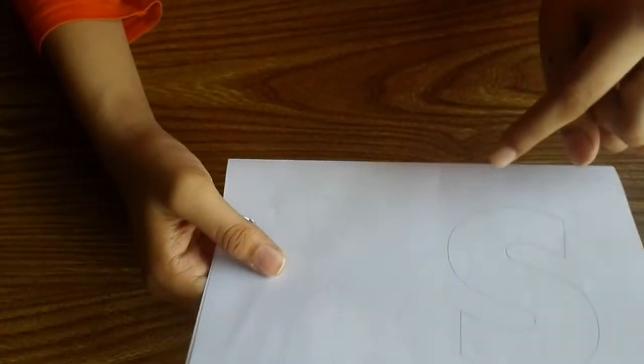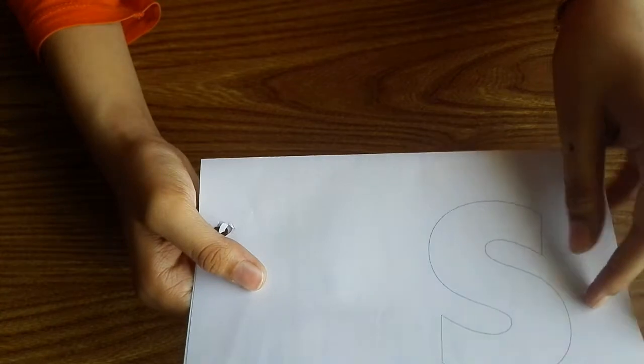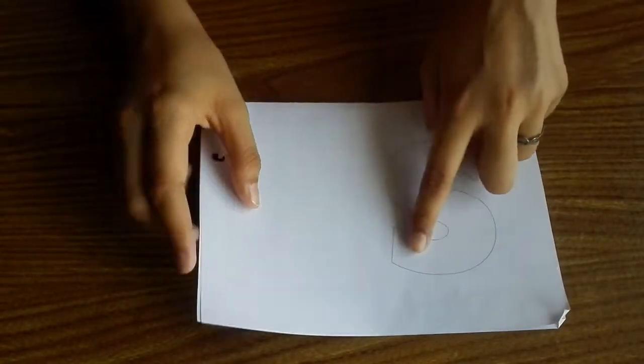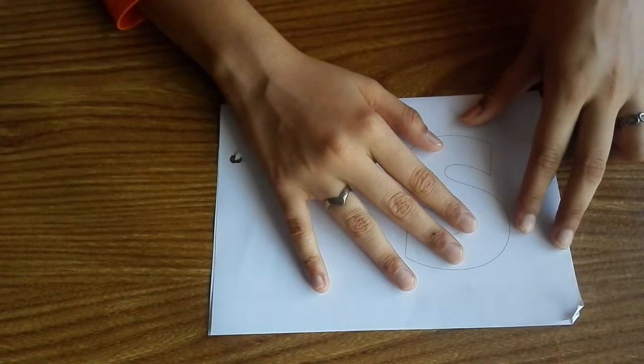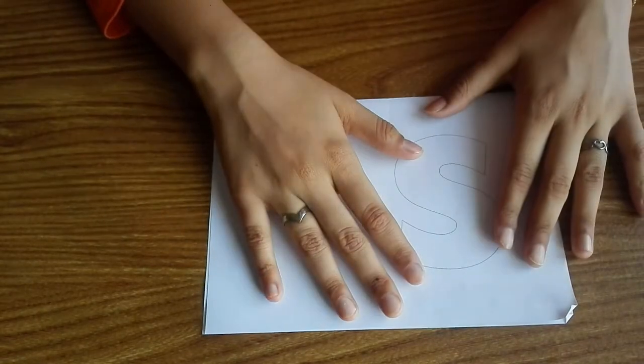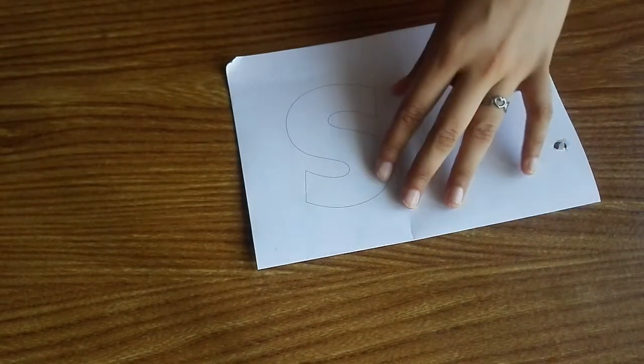The first thing that you are going to do is to take the printout of the template of S. I took a symbol font so that it will be easier to create the outline of the S.